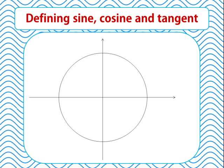The unit circle also gives us our definitions of sine, cosine and tangent. If we take a point P on the circumference of the unit circle, that point can be defined by the angle theta — the anti-clockwise angle it has moved from the positive x-axis, starting from the point (1, 0). Cosine of theta is the x-coordinate of point P, and sine of theta is the y-coordinate of point P. So cos θ relates to the x-coordinate, and sin θ relates to the y-coordinate of the point on the unit circle.